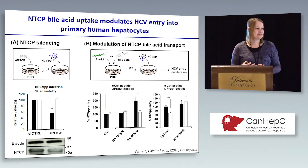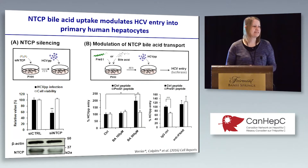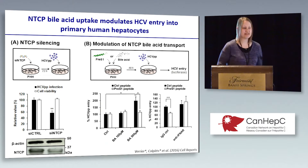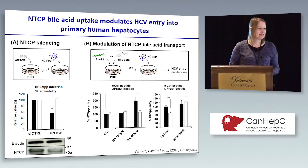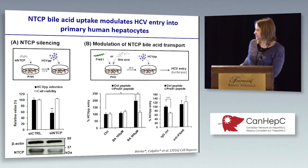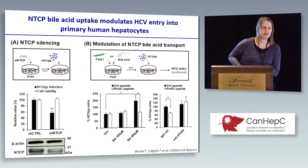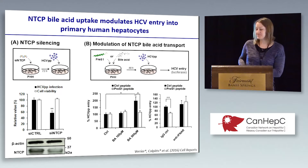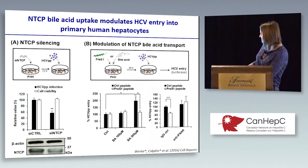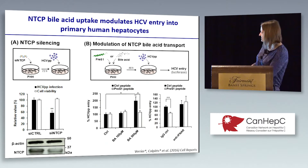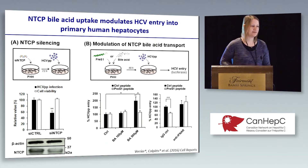We further confirmed that this was functionally relevant for HCV. By silencing NTCP in PHH, we saw a reduction in HCV entry. We also saw that bile acid increased entry of HCV into PHH, and that this could be reduced by adding pre-S1 to block bile acid transport. Finally, we confirmed that this was dependent on interferon responses, because we no longer saw an effect of pre-S1 in the presence of an antibody blocking the type 1 interferon receptor.